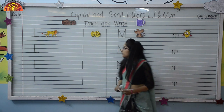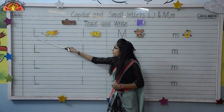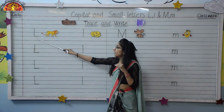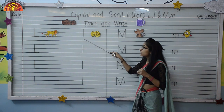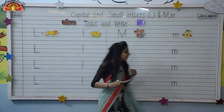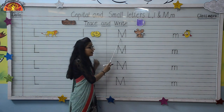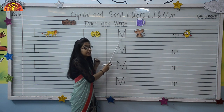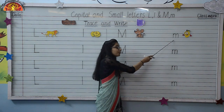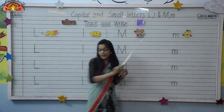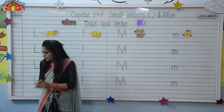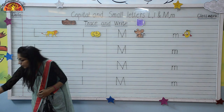So kids, look here. This is capital letter L, this is small letter L, this is capital letter M, and this is small letter M. Let's see some objects related to these alphabets.